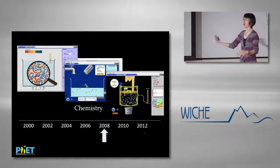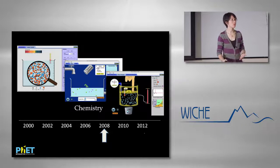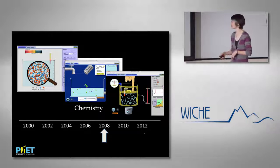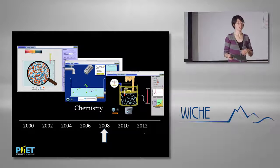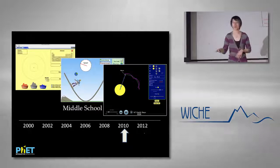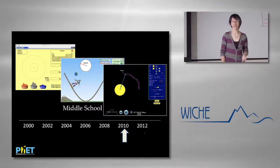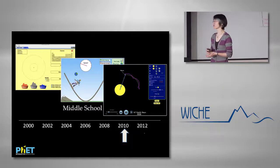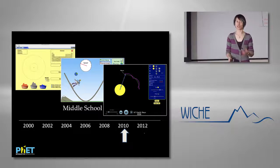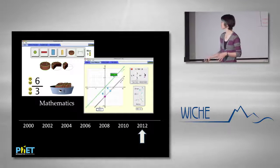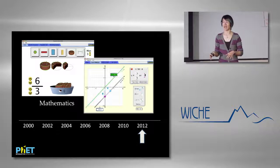Then we branched out into chemistry — my background is in chemistry, so this was a huge step forward for me. We started designing college-level chemistry sims around 2008. Around 2010 we moved into the middle school environment, working with schools in Texas to develop sims targeting grade four, five, and six science learning goals. We also moved into mathematics around 2012, mostly at the middle school level.